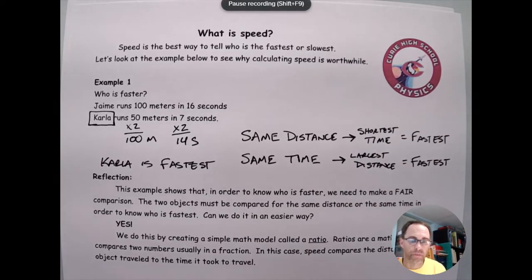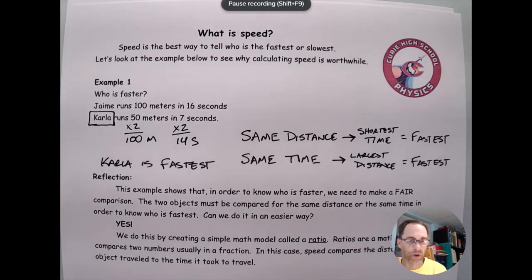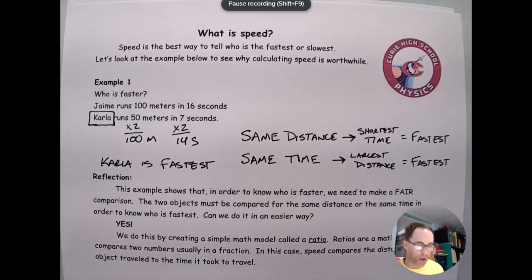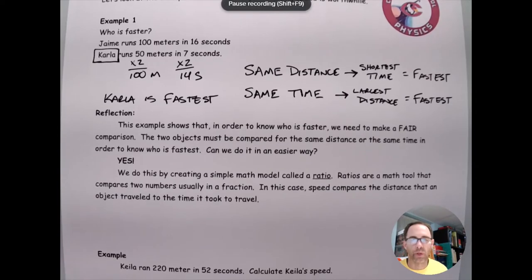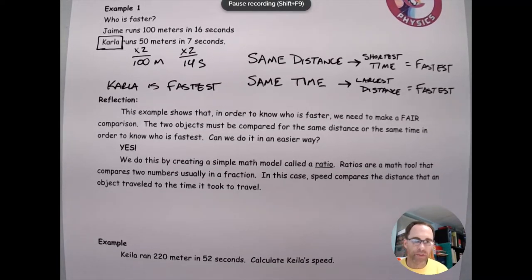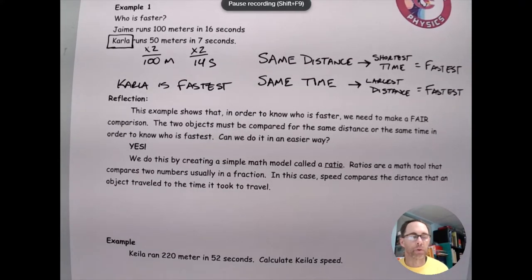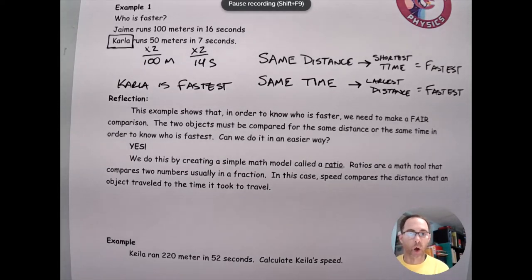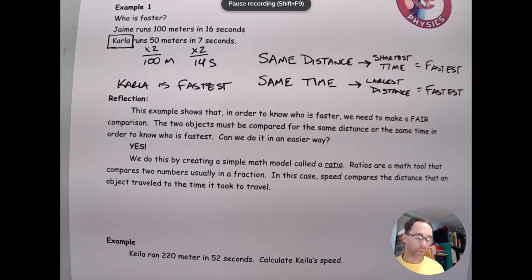That is actually how speed works. Speed works by making a comparison of the distance to the time for the same amount of time — that's what makes it a fair comparison. The only way to know who's fastest is when you make a fair comparison, meaning either the same distance or the same time. Speed allows us to make this fair comparison because it changes everything to the same unit of time.